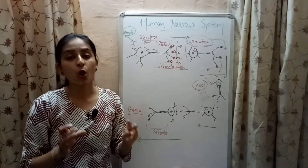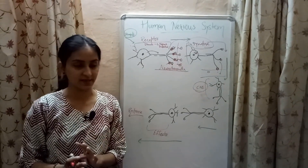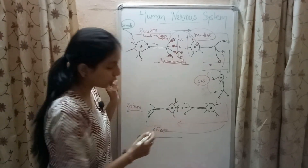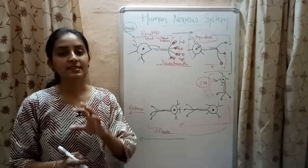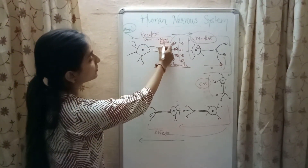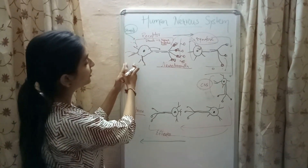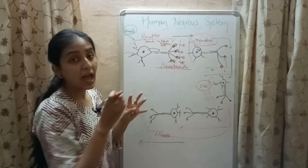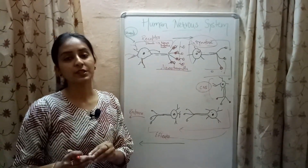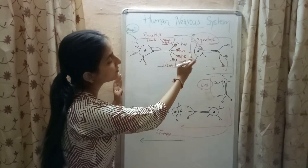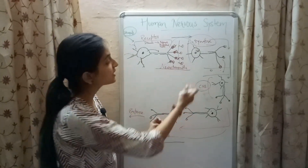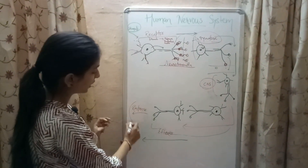Inside the central nervous system a response is created, again in the form of nerve impulses, which is carried by the neurons to the effector region. To revise the steps: receptors detect the stimuli; the stimuli in the form of nerve impulses is received by the sensory neurons; impulses travel from dendrites to the cell body and finally to the axon; at the axon terminal, vesicles release neurotransmitters which carry the nerve impulses through the synapse to the adjacent neuron — finally leading to the production of an appropriate response.